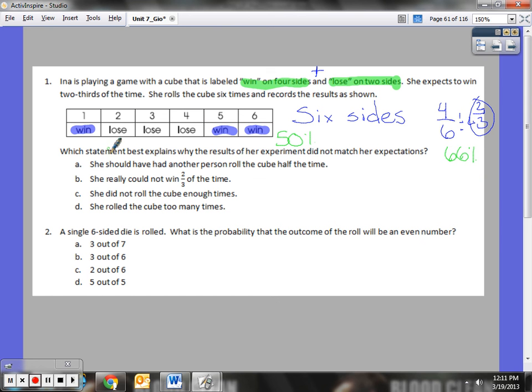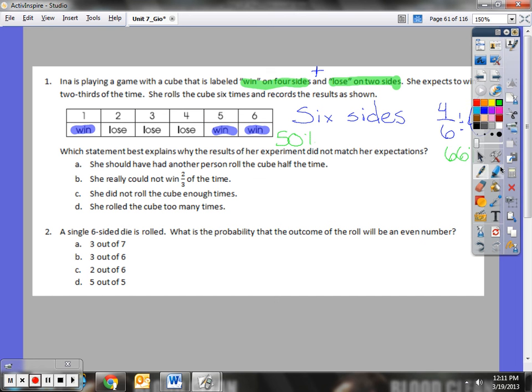Now, which statement best explains why the results of her experiment did not match her expectations? She could have had another person roll the cube half the time. Well, if I think about that, does it really matter who rolls the cube? Unless they're just holding the cube and putting it straight down, that's not considered a roll, so that should not matter.